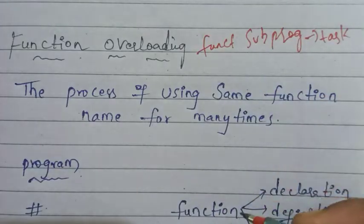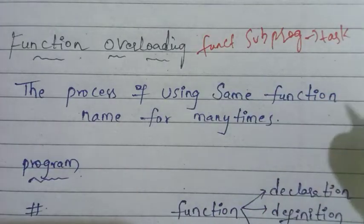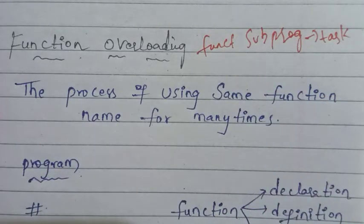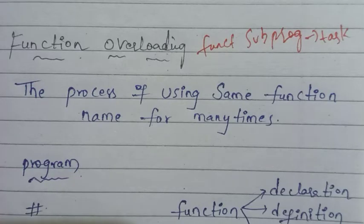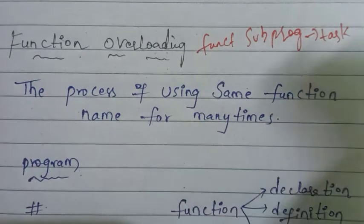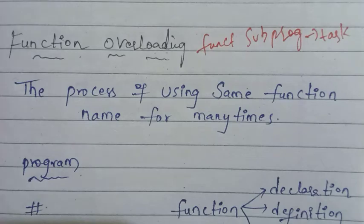We give a function a particular name — for example, a sum function could be named something like 'sum'. A multiplication function could be named 'multiply'. A function that prints or displays a value could be named 'display'. You can see any function name.